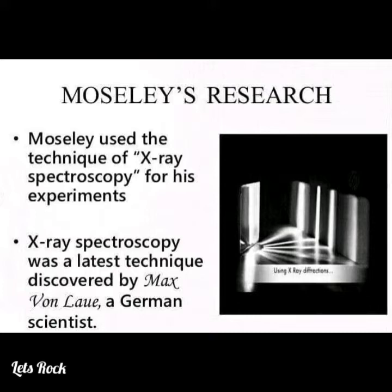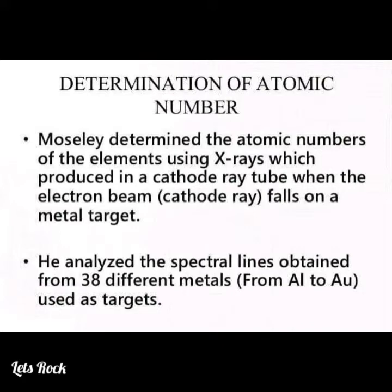Moseley used the technique of X-ray spectroscopy for his experiments. X-ray spectroscopy was a technique discovered by Max von Laue, a German scientist, using X-ray diffraction. Moseley determined the atomic numbers of elements using X-rays produced in a cathode ray tube when an electron beam falls on a metal target. He analyzed the spectral lines obtained from 38 different metals used as targets.